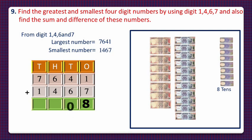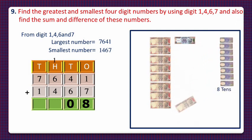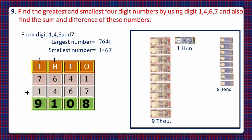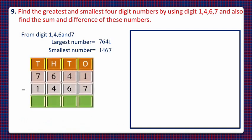Since 0 tens are remaining, we'll write 0 in the tens column, and carry 1 hundred to the hundreds column. Now we have 11 hundreds, so we'll take a 1000-rupee note instead of 10 hundreds, leaving 1 hundred to write in the hundreds column. We carry 1 thousand to the thousands column, giving us 9 thousands total. So 9108 is the sum of these two numbers.